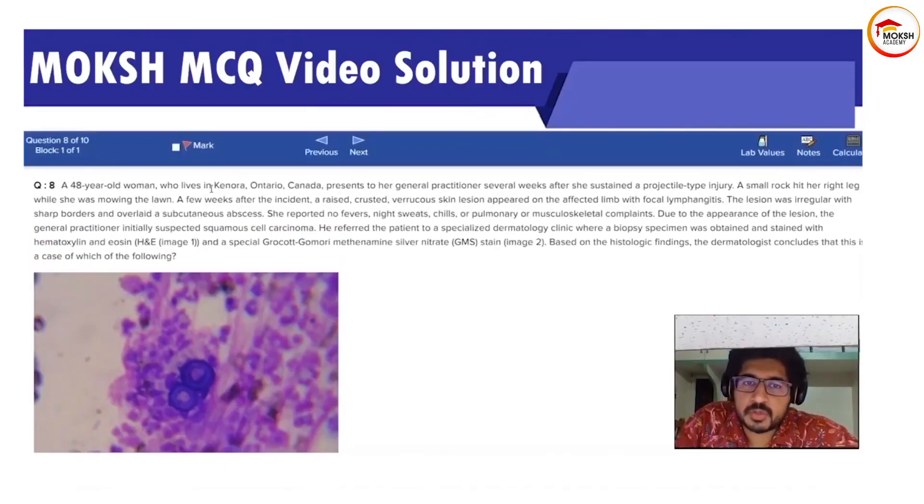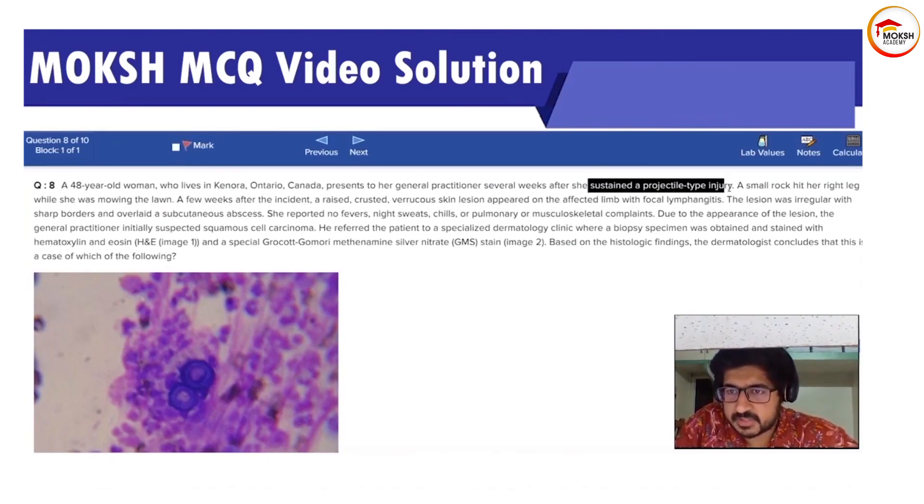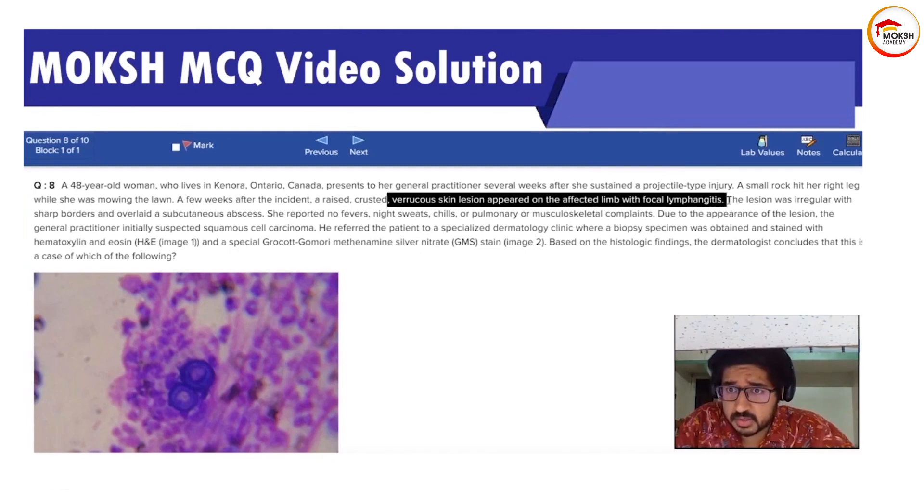A 48-year-old woman who lives in Kenora, Ontario, Canada is presenting to her general practitioner several weeks after she sustained a projectile type of injury. A small rock hit her right leg while she was mowing the lawn. A few weeks after the incident, a raised crusted varicose lesion appeared on the affected limb.